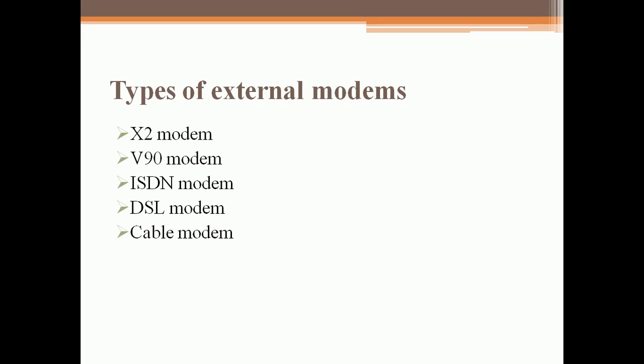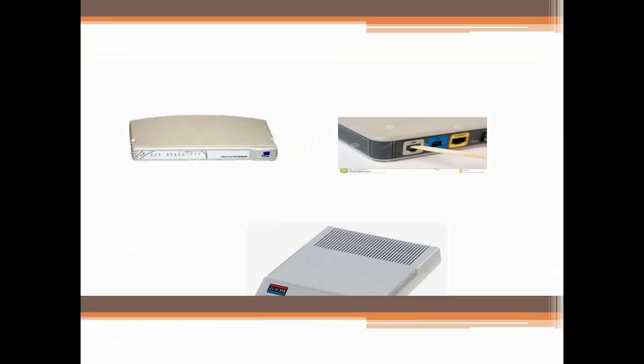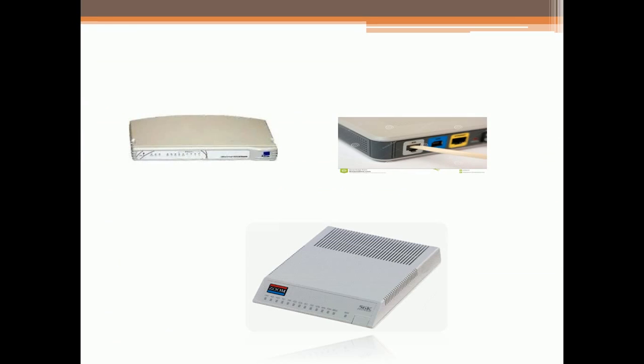Cable modem is a network type that provides bi-directional data communication and is used to deliver broadband internet access in the form of cable internet. Basically the routers or Wi-Fi we are using at our home contain a DSL modem. Here is a picture of V90, ISDN and DSL modem.